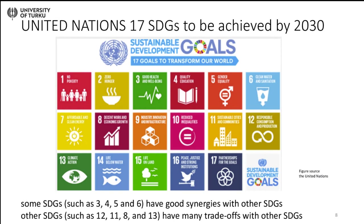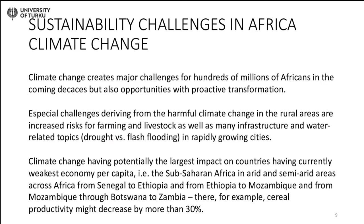Sustainable development is now politically steered by the United Nations' 17 Sustainable Development Goals, which need to be achieved by the year 2030. These different sustainable development goals are connected to each other. For example, SDG 9, which is about innovations, is connected to urban development and to the no-poverty target. Various sustainable development goals are interconnected.